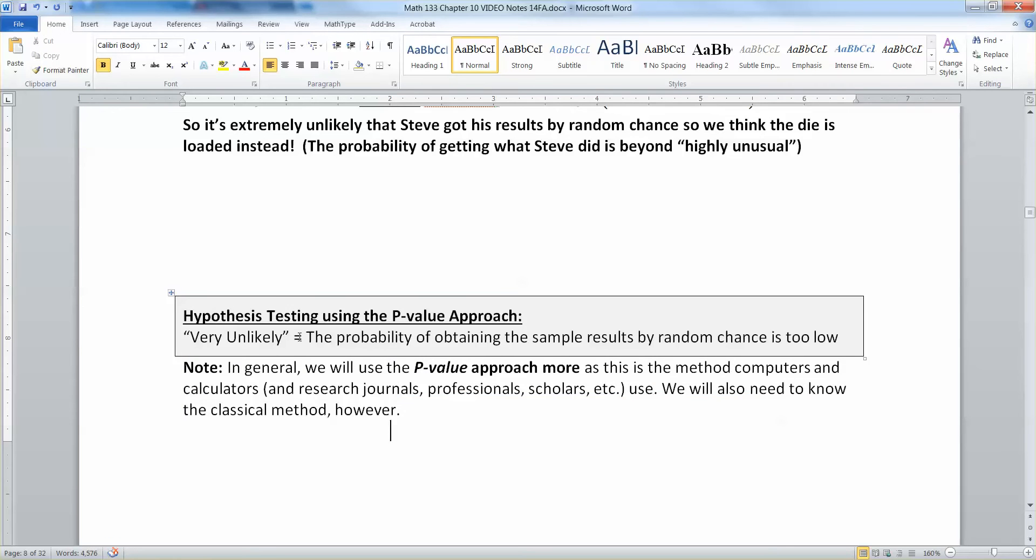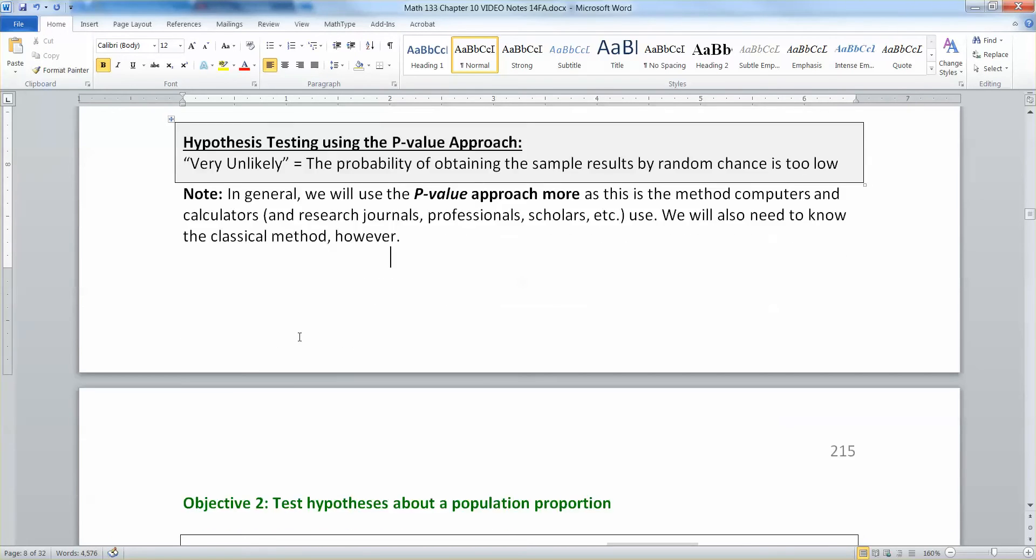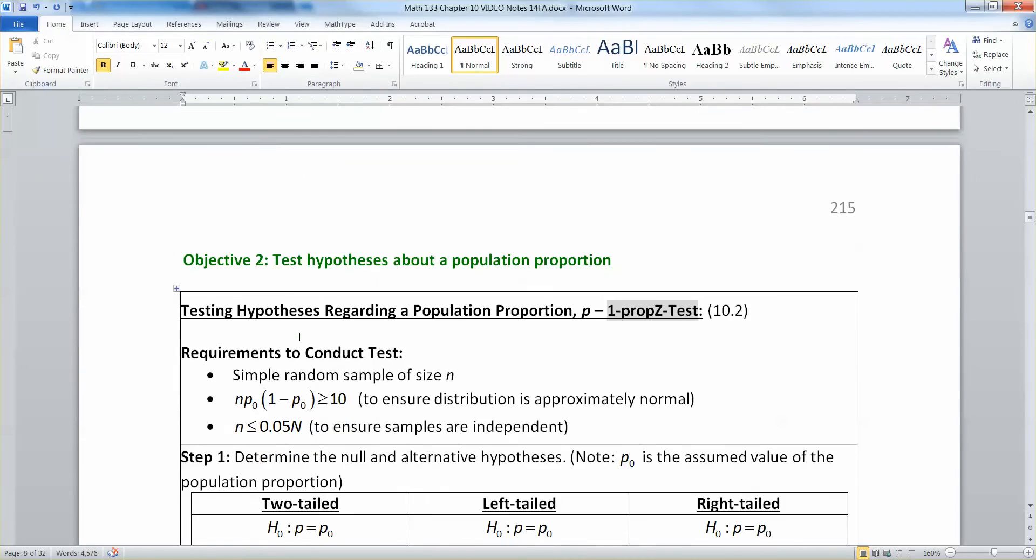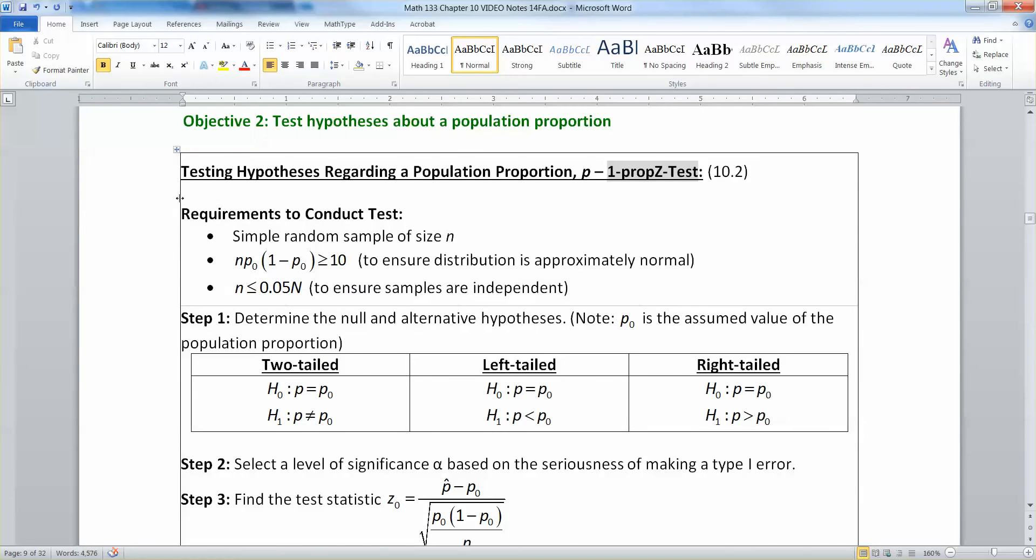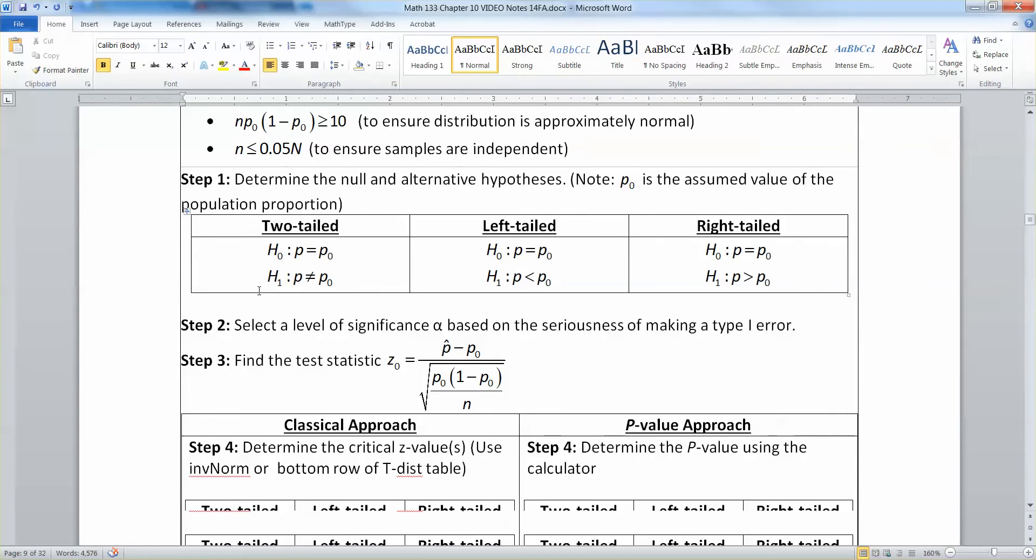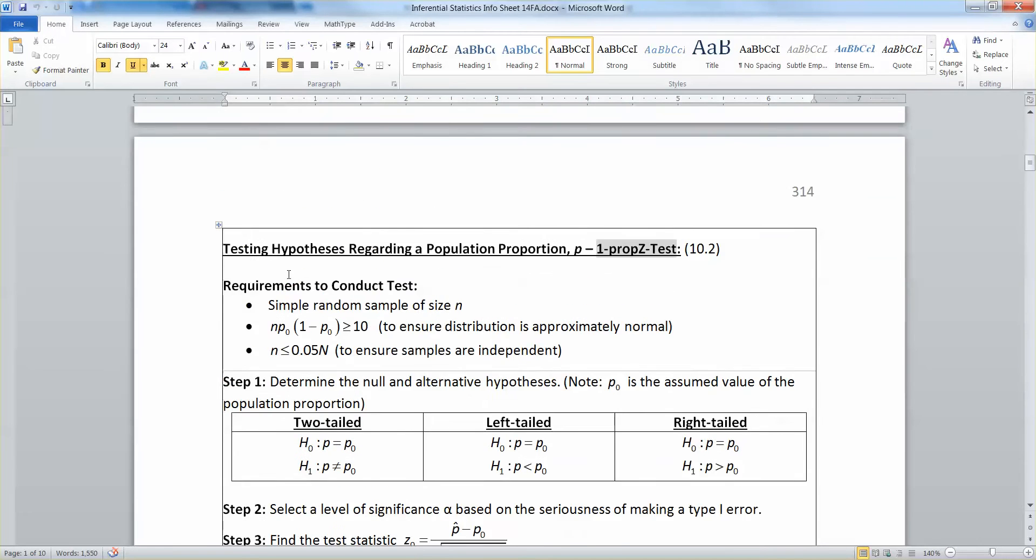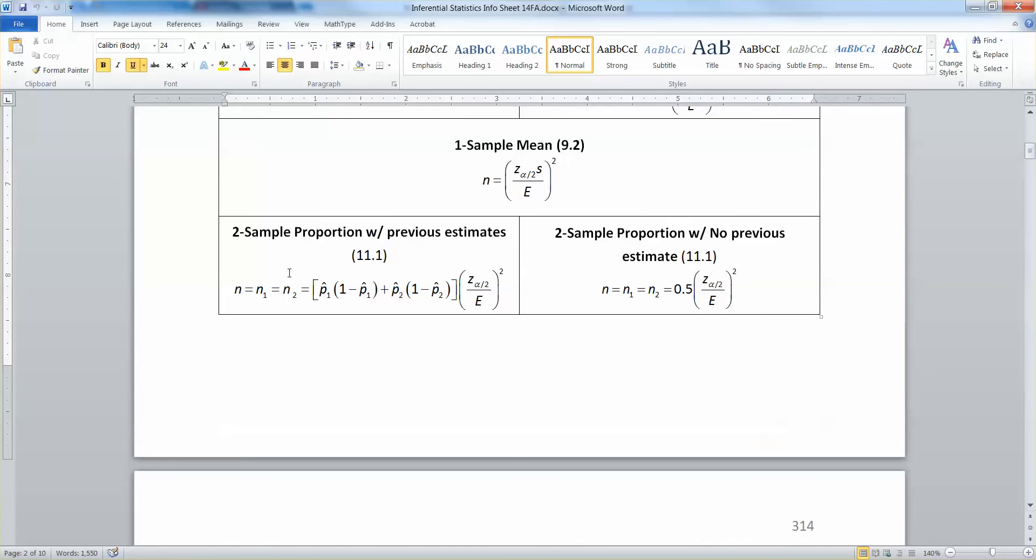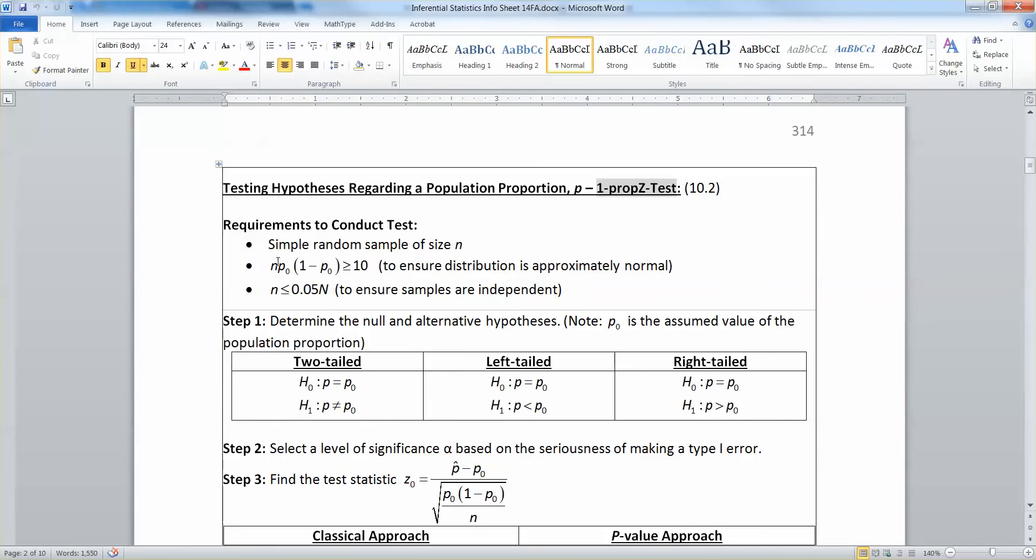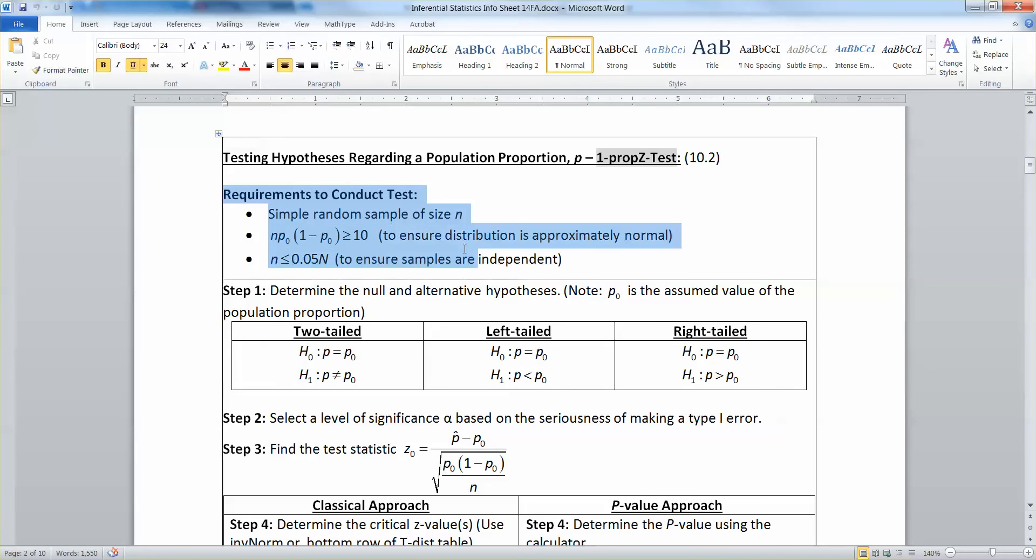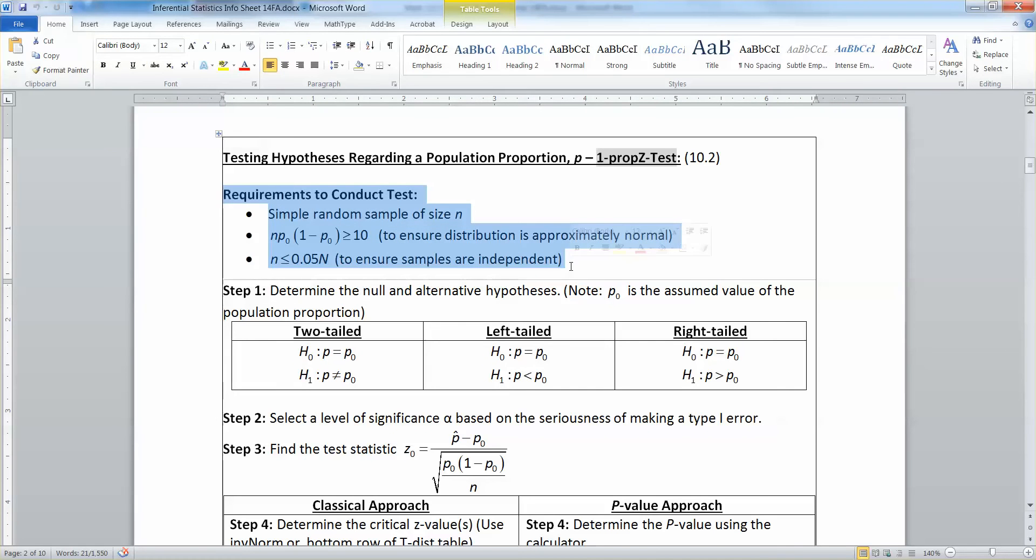Alright, so now let's take these two big type approaches, classical and p-value, and let's apply them to a test. Now, all of this table is given to you on your inferential statistics sheet right here. So, it's the second page of your inferential statistics sheet.